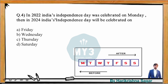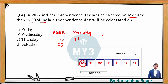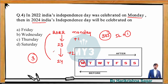If you observe this question: in 2022, India's Independence Day was celebrated on Monday. What day will Independence Day fall in 2024? From 2022 to 2023, one year completes — 365 days gives 1 odd day. From 2023 to 2024, since 2024 is a leap year, it contributes 2 odd days. Total odd days from 2022 to 2024 is 3. Move forward 3 days from Monday: 1, 2, 3 — the answer is Thursday.